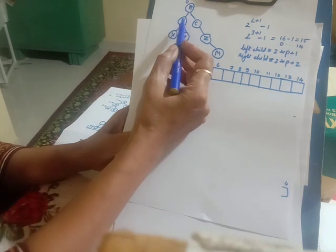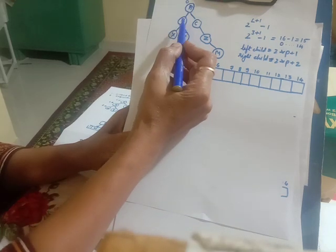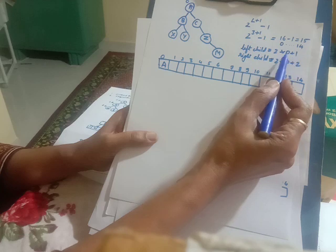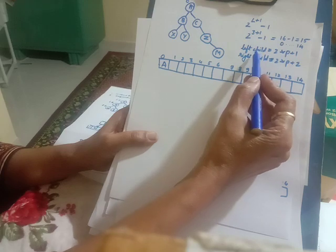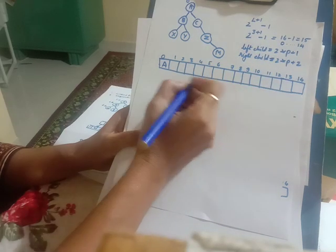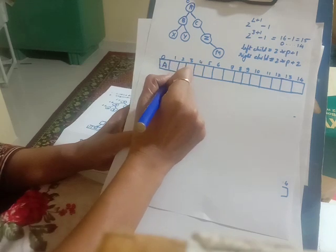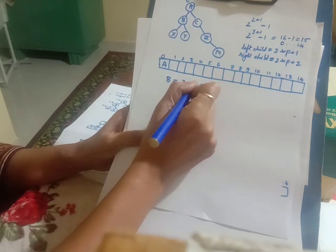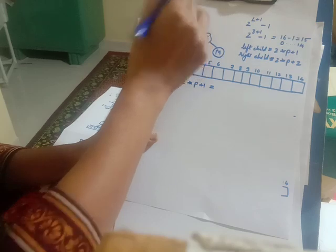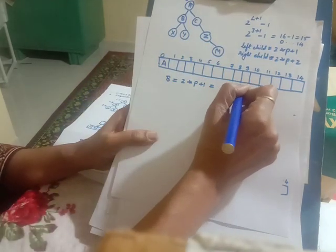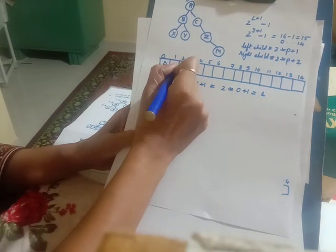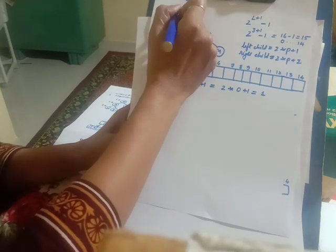The next node to consider is the left child of A, which is B. The address of the left child is given by 2 star p plus 1, where p is the address of the parent. B is the left child, and its parent A has address 0. So the address is 2 star 0 plus 1, which equals 1. B is stored at location 1.